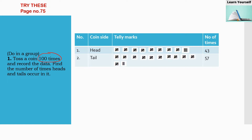There are only two possibilities when you are tossing a coin — either you will get head or you will get tail. I have made a table where I have noted down heads and tails. As I toss the coin, I record each observation. The first try I got head, so I marked it here. Second I got tail, so I marked it like this.